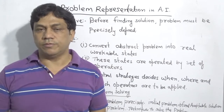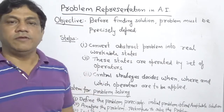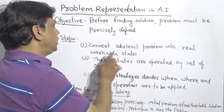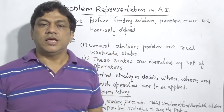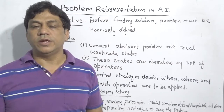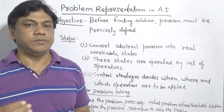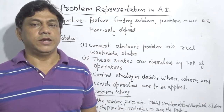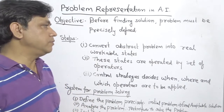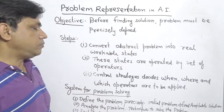How will we define the problem? I have written three steps by which you can define any AI problem. First, whenever any problem is given in AI, it must be convertible into a real workable stable state. Before reaching the destination or the solution, the AI problem should be clearly separable into specific intermediate states. We should know what the intermediate states are before reaching the final solution.